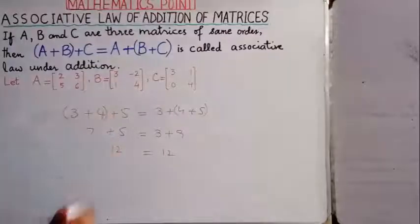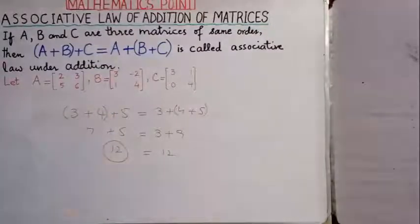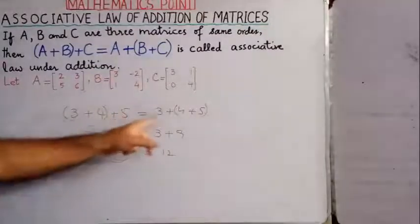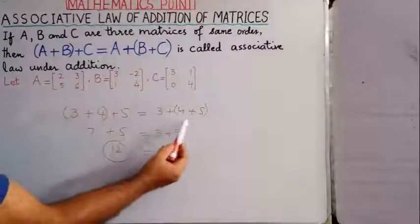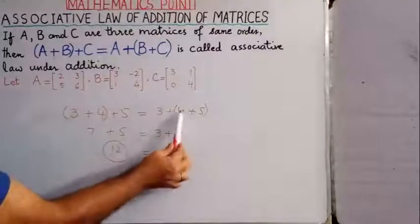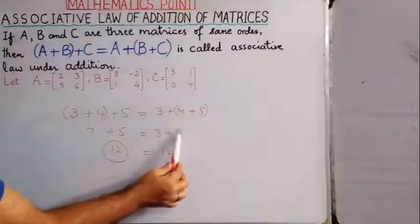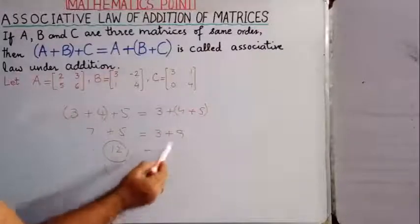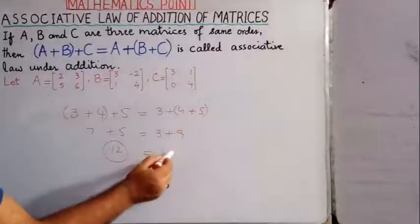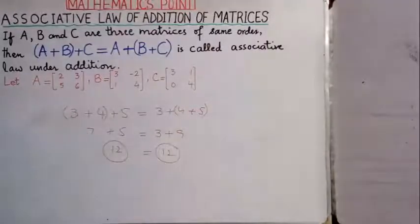The final answer on the left-hand side is 12. Now if we add only 4 and 5 first, and then add 3, the answer is still 12.